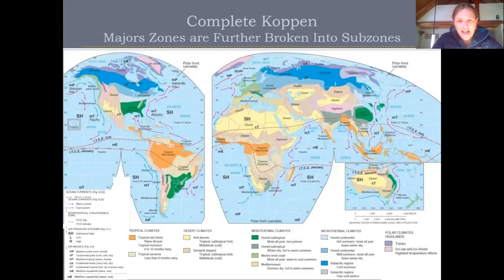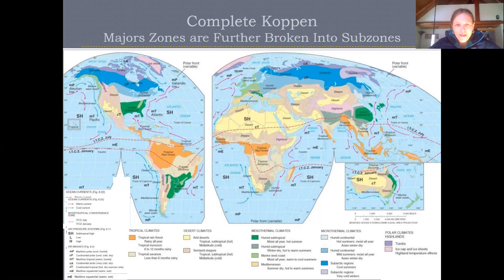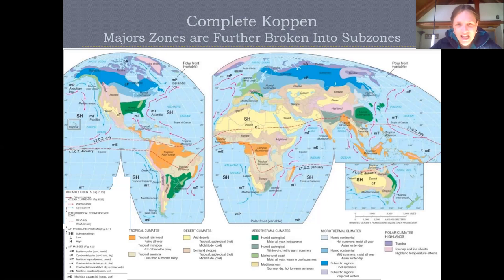Scientists don't like to leave things simple, so the Köppen system breaks up each of those bigger zones into further categories. This more complex world map shows that within the tropics there are more extreme wet areas and more seasonally wet areas, the dry climates have extreme dry and less dry areas, and the mesothermal climates have different climates with varying seasonality and precipitation.